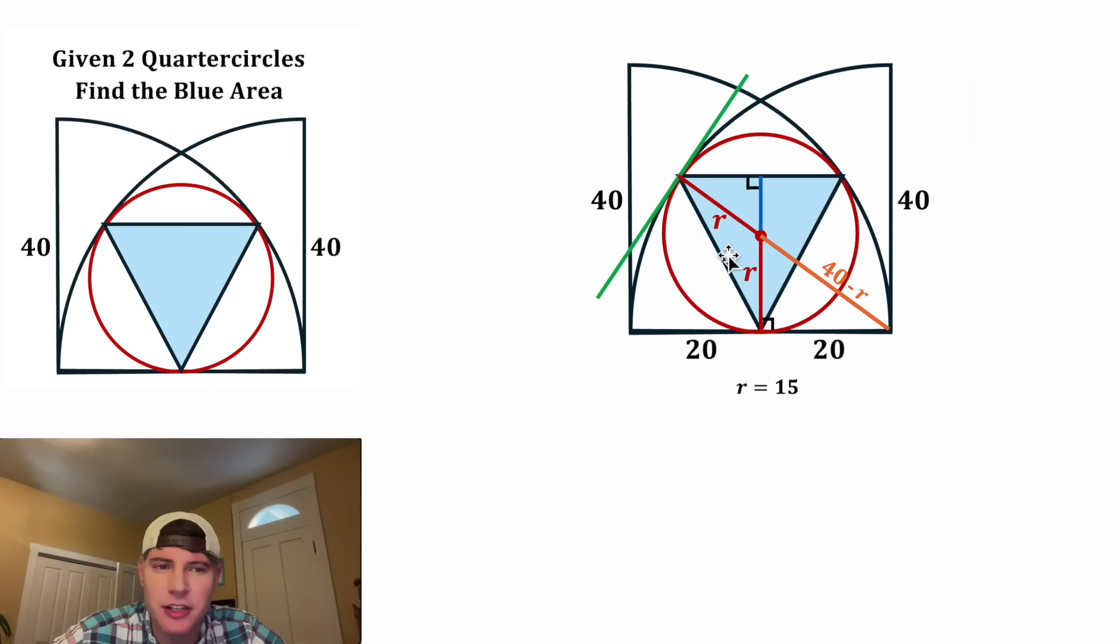We can change this R into a 15, this R into a 15, and this R into a 15. And 40 minus 15 is equal to 25. And now we no longer need this R.